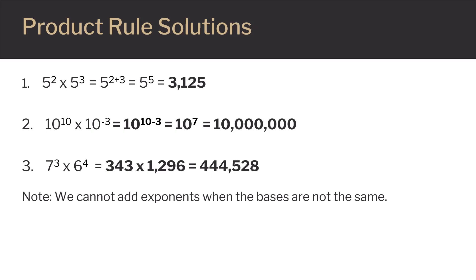Next, we have ten to the tenth power times ten to the negative three power. We're going to do the same thing here, adding the exponents. Ten plus a negative three is seven, so we end up with ten to the seventh power, or ten million.